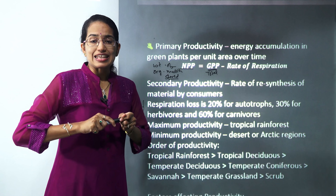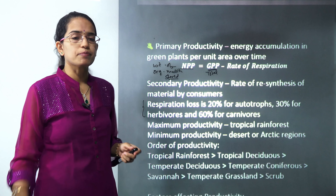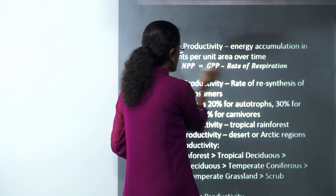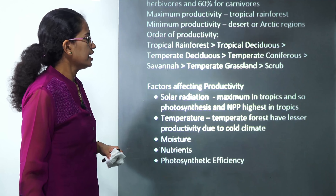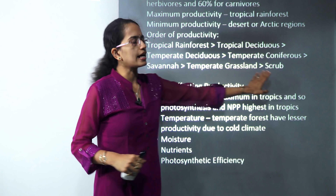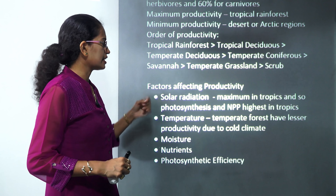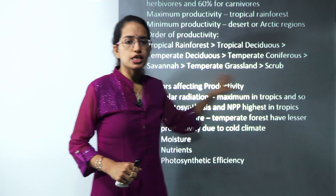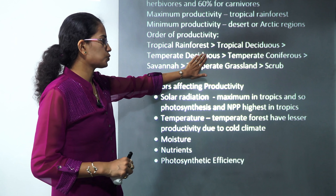The highest productivity is seen in tropical rainforest areas and the minimum in desert or arctic areas. The decreasing order of productivity is: tropical, followed by temperate, then scrub or desert, and arctic areas. This order is sometimes a direct MCQ question, so make sure you are well versed with it.